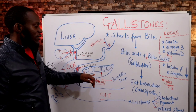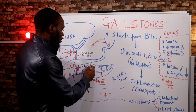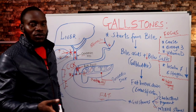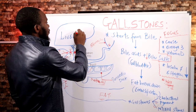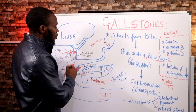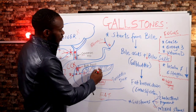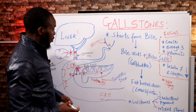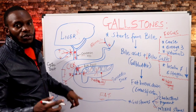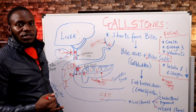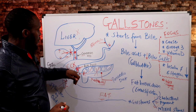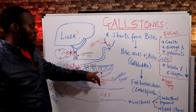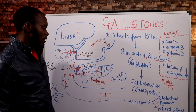With the pancreatic duct blocked, this causes autodigestion — the pancreas starts digesting itself because proteases, which break down proteins, begin destroying the pancreatic tissue. This is called acute gallstone pancreatitis. Alcohol intake can also cause pancreatitis. In summary: blocking the cystic duct causes gallbladder inflammation, pain, and distension; blocking the bile duct causes jaundice and steatorrhea; and blocking the pancreatic duct causes autodigestion of the pancreas — acute pancreatitis.